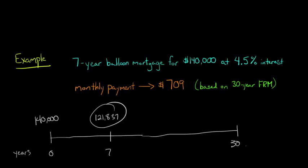At this point in time, after seven years, the balloon payment comes due. And the balloon payment is going to be for $121,837. Basically, this is the balance due on the mortgage at the end of year seven.